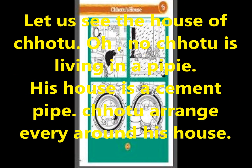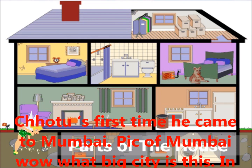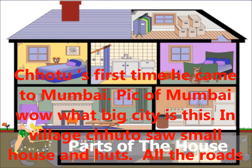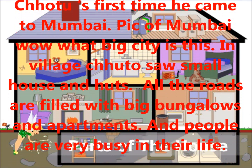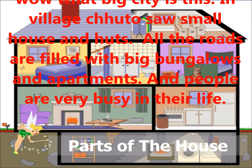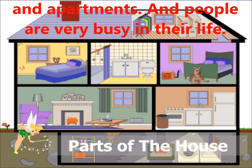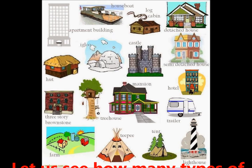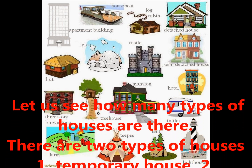Chotu is a poor boy. He lives in a cement pipe which is beside the road. He arranged everything around his house. Chotu first time came to Mumbai. He saw that all the roads are filled with bungalows and apartments, and people are also busy in their life. Chotu observed that people live in different types of houses.